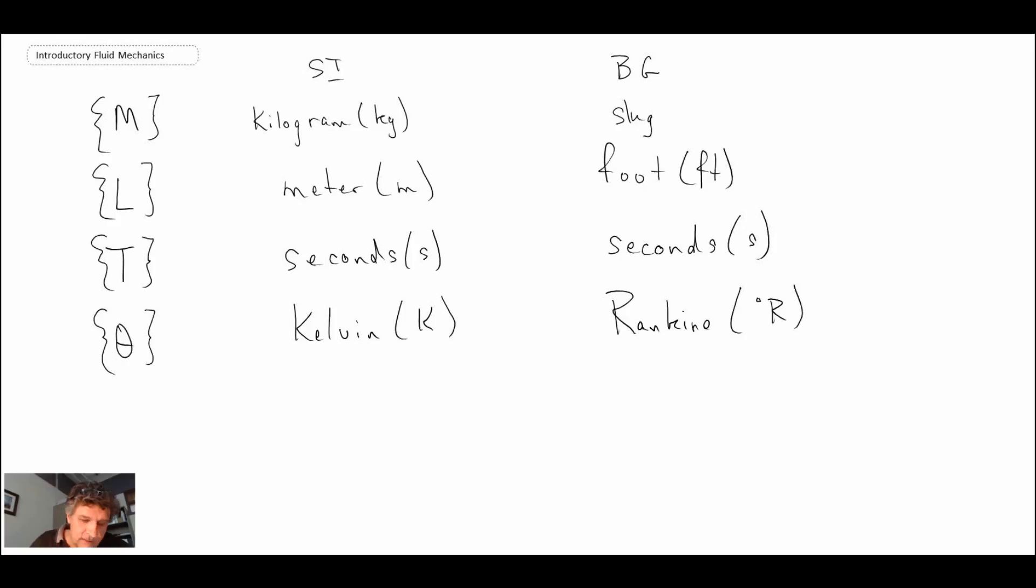So those are our primary dimensions. We can then express the dimensions for what we call secondary dimensions, which are a combination of all the above for whatever we might be quantifying. Secondary dimensions are composed of M, L, T, and theta dimensions.